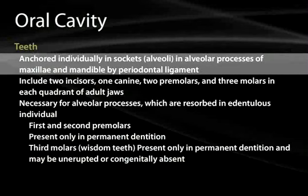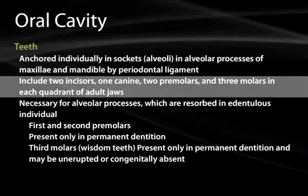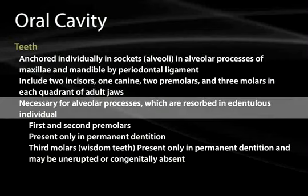The teeth are anchored individually in the sockets through the gomphosis ligaments or gomphosis joints, and the periodontal ligaments anchor them into the gomphosis sockets. This includes two incisors, one canine on each side, two premolars on each side, and three molars in each area of the adult jaw, which can be divided up into quadrants.